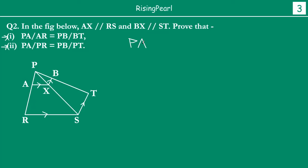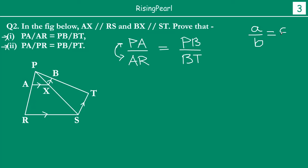So let us start out where we left off in the last webisode. We have proved that PA divided by AR is equal to PB divided by BT. Now what we are going to do is swap the numerator and denominator. We know that if A by B equals C by D for any fraction, then B by A is also equal to D by C. So this will become AR divided by PA equal to BT divided by PB.